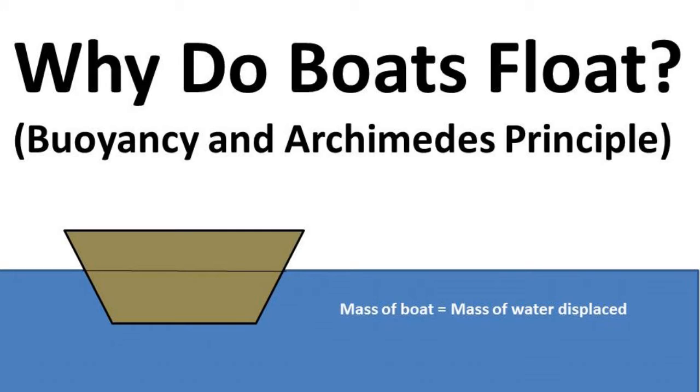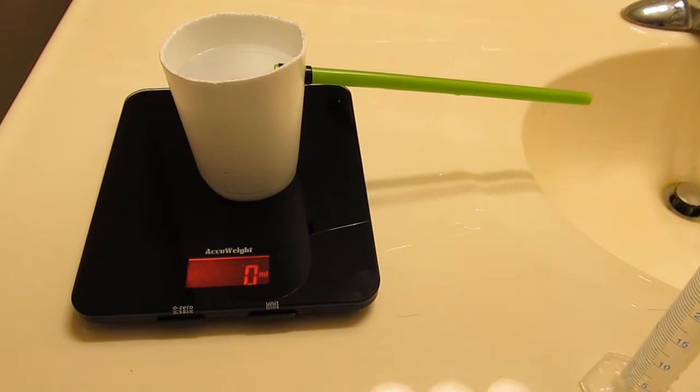Archimedes Principle indicates that the upward buoyant force that is exerted on a body immersed in a fluid, whether fully or partially submerged, is equal to the weight of the fluid that the body displaces. To prove this,